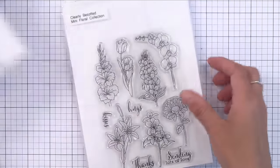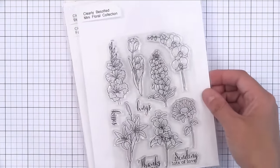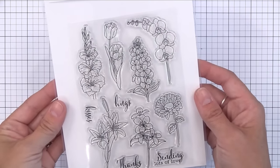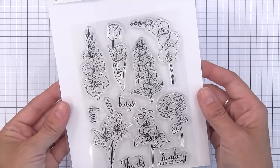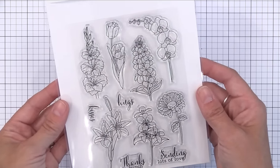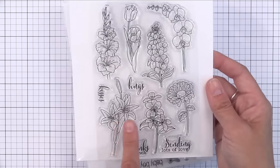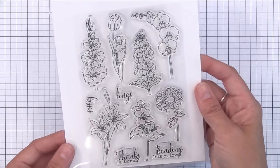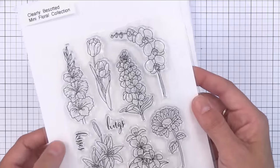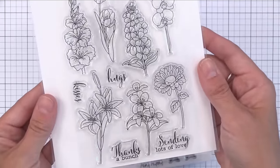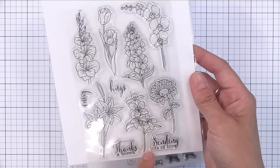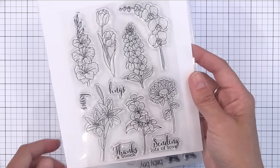Okay, so Clearly Besotted is known for creating beautiful, beautiful, beautiful floral images that are great for coloring techniques. This set is no different. What's unique about it though is that they're smaller images. So Clearly Besotted has lots of large floral images, but this is a set of smaller ones and they do have that thin outline that I love so much about their stamps. So this is a great set to practice any watercolor or Copic coloring that you may want to try. You can team a few different flowers up together on one card.